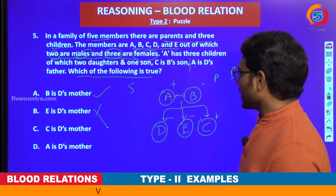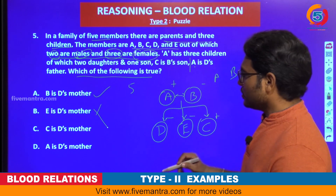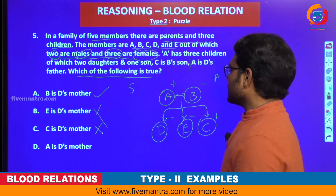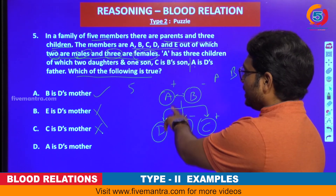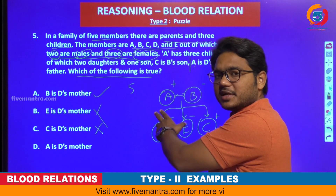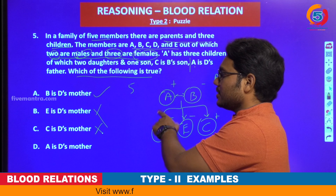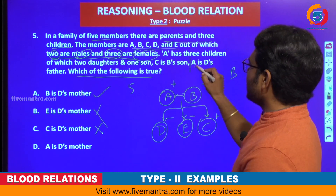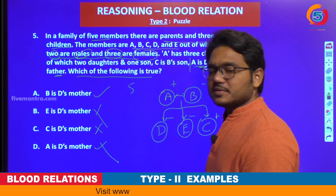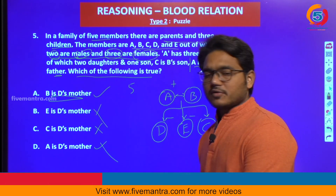Just for practice, try to check the other options. E is D's mother — is it so? No, that is not correct. C is D's mother — no, they are siblings actually. A is D's mother — A is a parent, but he is male; A is father, not mother. So our answer is already found.